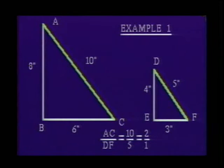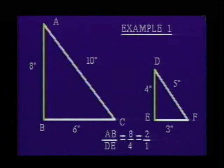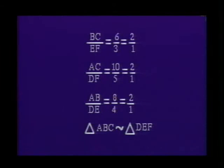Side AC must correspond to side DF, since these are the longest sides of both triangles. The ratio of side AC to side DF is 10 to 5, or in simplest form, 2 to 1. The remaining sides AB and DE must be corresponding sides. The ratio of side AB to side DE is 8 to 4, or in simplest form, 2 to 1. We see that the ratios of all the corresponding sides are the same — 2 to 1. Thus the two triangles ABC and DEF are similar.